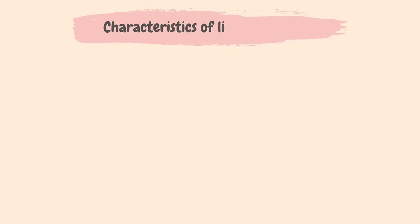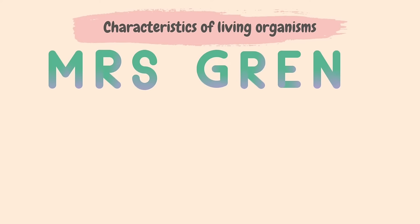Biology is the study of living things, which are often called organisms. There are 7 characteristics that an organism must have in order to be recognized as a living thing. Mrs. Gren is a mnemonic that may help us remember the 7 characteristics of living things.